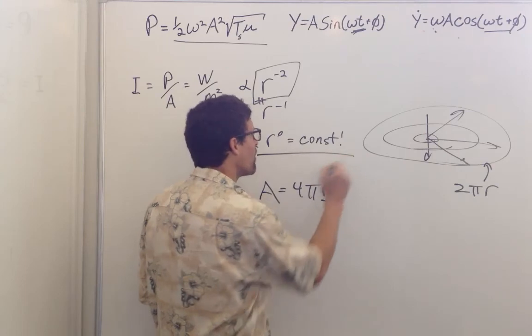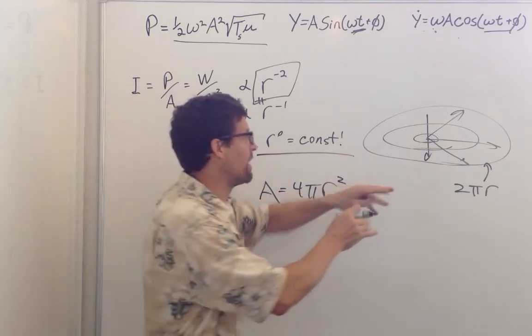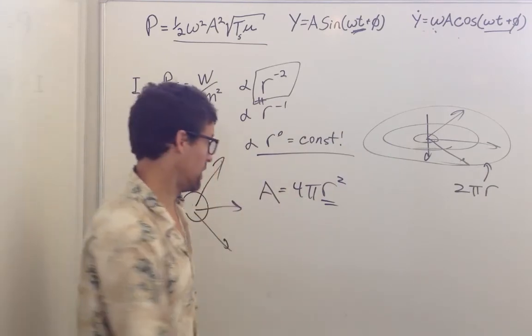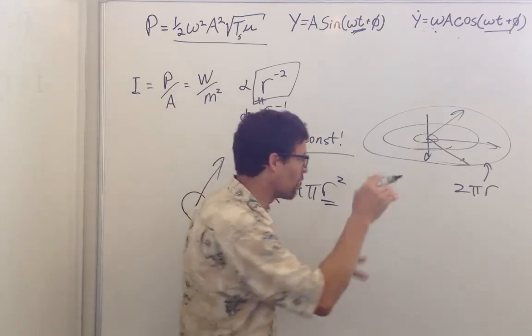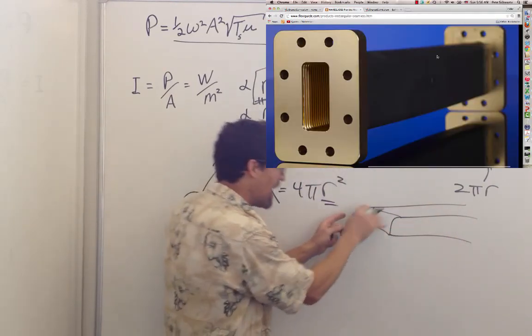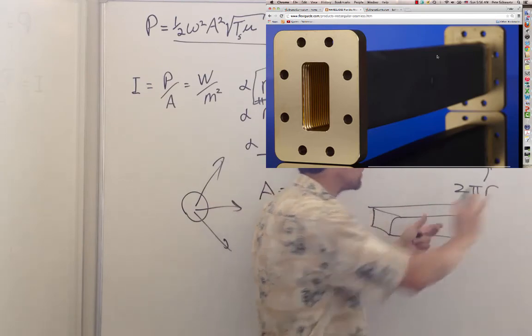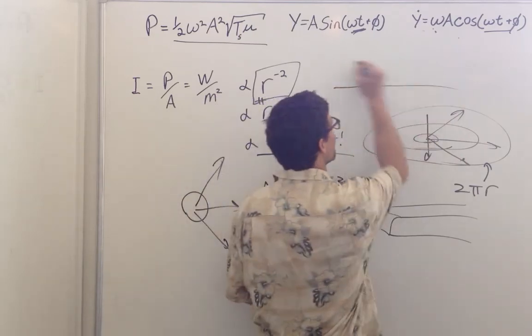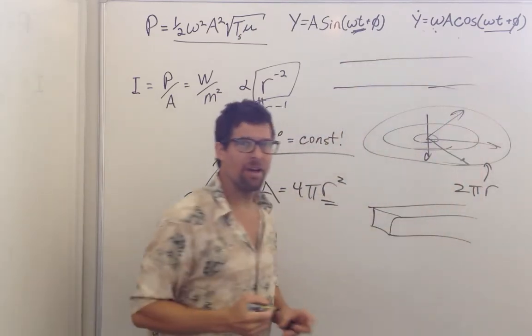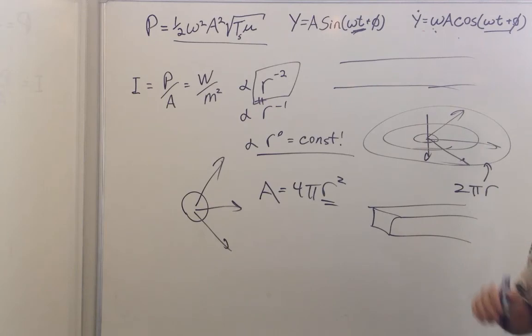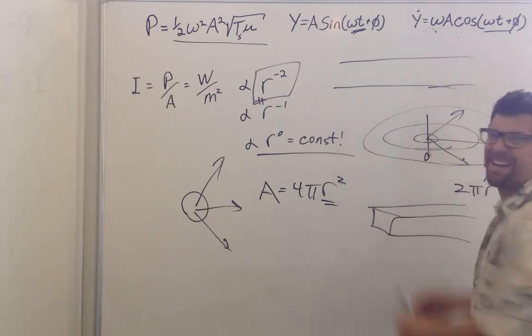And what about r to the zero — intensity not dropping off at all? If the wave is moving in just one dimension and not spreading out, we have wave guides. An electromagnetic wave in a square hollow pipe travels and doesn't get weaker at all. You can also see this in a water wave in a canal — there's a story about a man in Britain who watched a wave in a canal and followed it for miles, and the wave just continued on without getting weaker, because it wasn't spreading out at all.